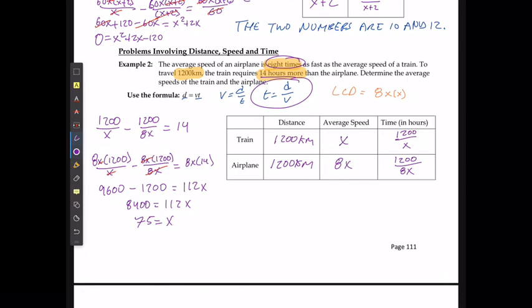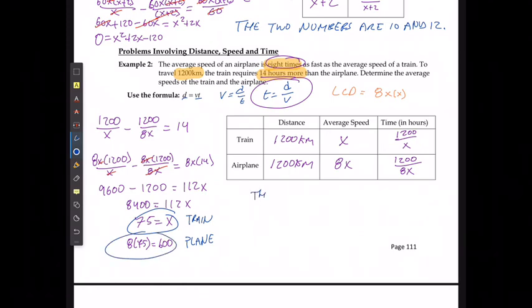There is my speed of the train. If my plane is 8x, then I can say that 8 times 75 is going to equal 600. The speed of the train is 75 kilometers per hour and the speed of the plane is 600 kilometers per hour.